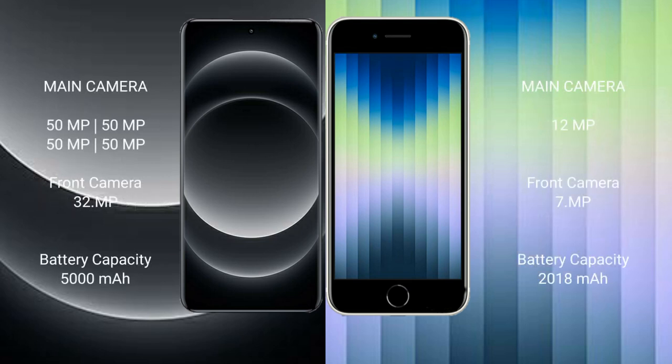The Xiaomi 14 Ultra features a rear quad-camera setup with 50MP plus 50MP plus 50MP plus 50MP sensors and a 32MP front camera. The iPhone SE features a rear single-camera setup with a 12MP sensor.